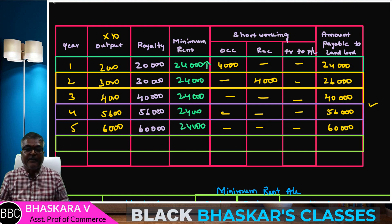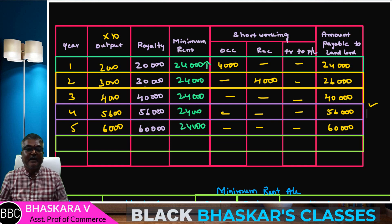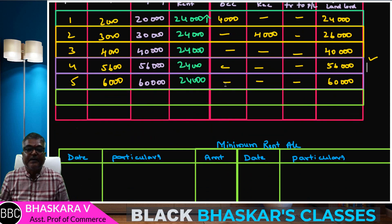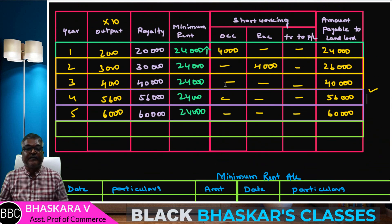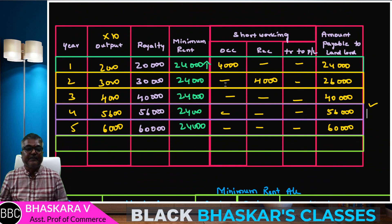Minimum rent — Ackar recovery — 69,000 students. Ackar short working, minimum rent account: 180,000; 85,000.